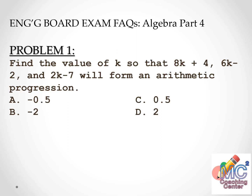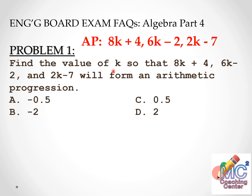Find the value of k so that 8k plus 4, 6k minus 2, and 2k minus 7 will form an arithmetic progression. Is it letter A, negative 0.5? Letter B, negative 2? Letter C, 0.5? Letter D, 2? Given in the problem is an arithmetic progression with first term 8k plus 4, second term 6k minus 2, third term 2k minus 7. The possible values of k in the choices are negative 0.5, negative 2, 0.5, and 2.